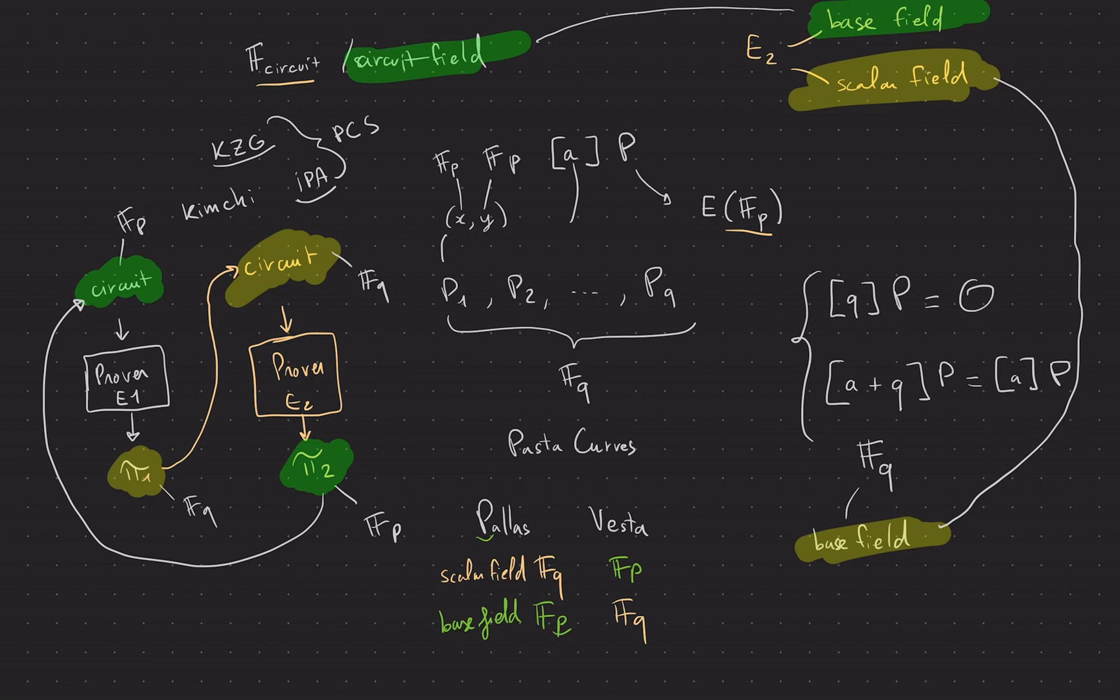So that's the trick. That's the trick I wanted to talk about in this video. Usually this is referred to as cycles of curves. And this one is a, I believe we call that a two cycle. Because it's a loop that only involves two curves. But you could have a bigger loop or something like that.